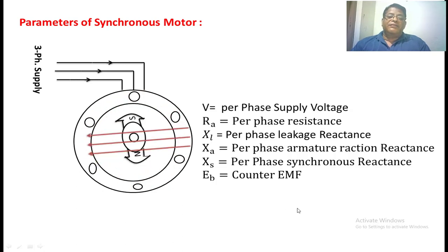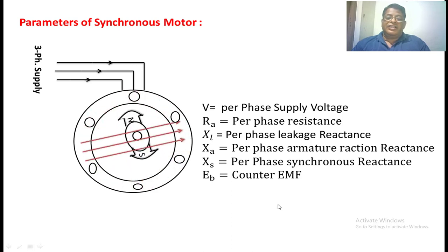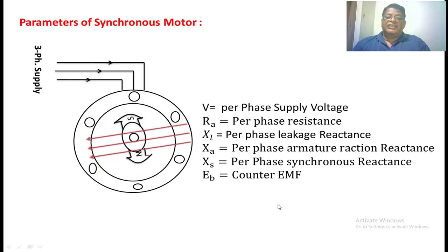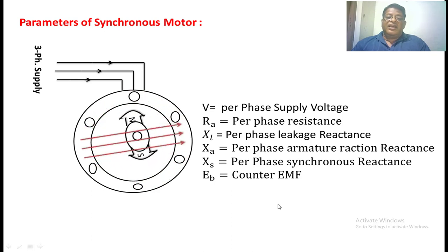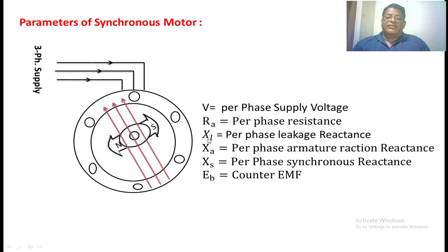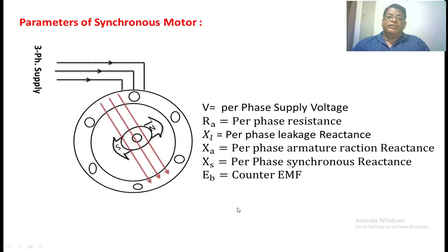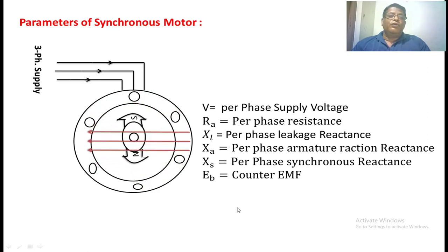These are the different parameters of a stator winding: V is the per-phase supply voltage, RA is the per-phase armature resistance, XL is the per-phase leakage reactance, Xa is the per-phase armature reaction reactance, XS is the per-phase synchronous reactance — which is the sum of XL plus Xa — and Eb is the counter EMF induced in the stator winding due to the rotating flux.